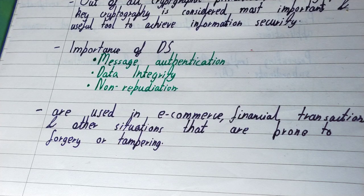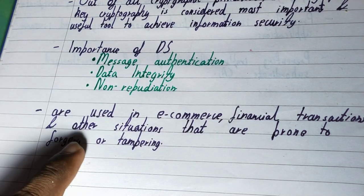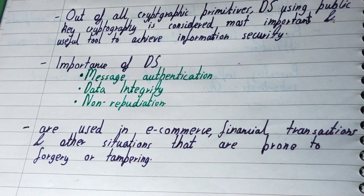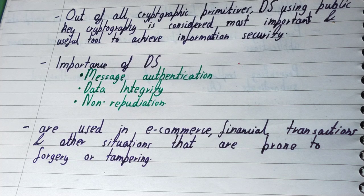Digital signatures are used mainly in e-commerce for buying and selling goods and services online, in financial transactions like payments, and in situations prone to forgery and tampering. However, it cannot be used for everything online because the cost is high — you must generate a private signature and register it with an organization. That's why generally larger organizations with established businesses use it for sending data online.